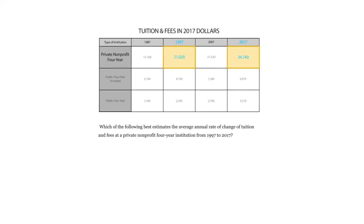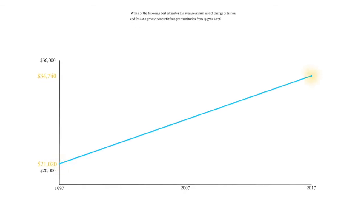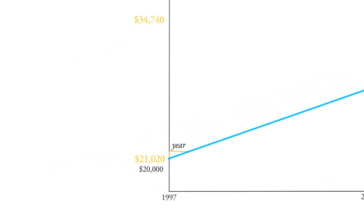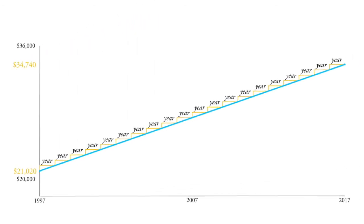We can write those down. In 2017, tuition was $34,740. And 20 years before in 1997, it was only $21,020. So we can look at this as a linear proposition and figure out how much per year the cost of college is going up at these particular schools between 1997 and 2017.